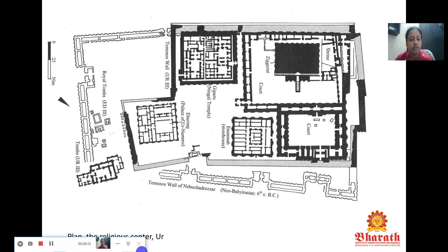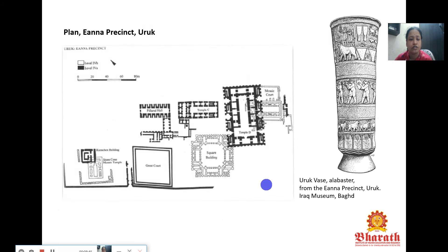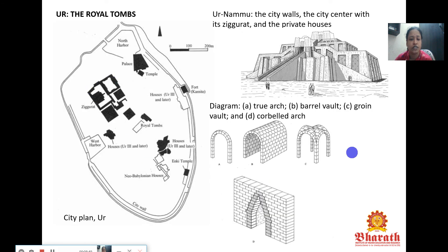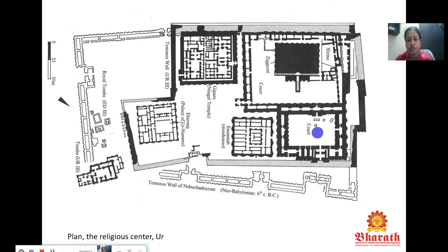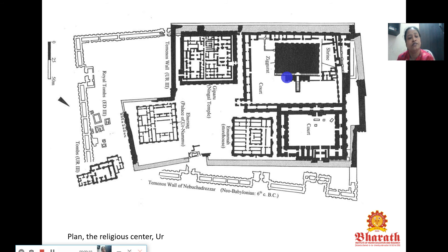Here is the religious center of Ur in detail. The location of the ziggurat, the court area where open public gatherings happened, another gathering space as you arrive inside, the palatial spaces, and the storage spaces necessary for rituals. You have the Ningal temple of the Kekiparu, and the tombs of royal members located on the outside of this complex.